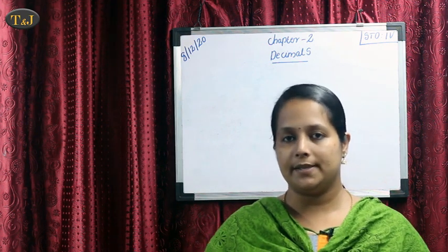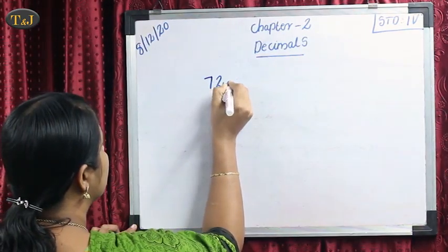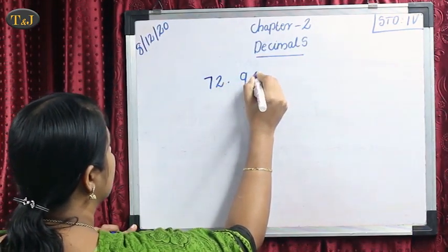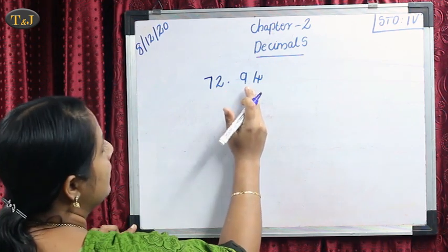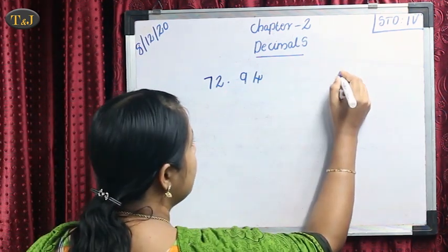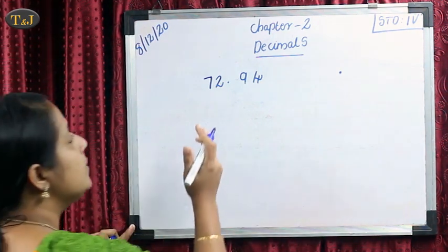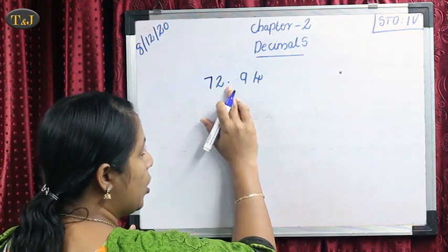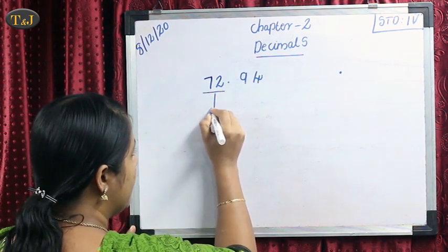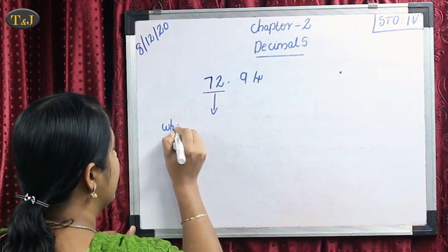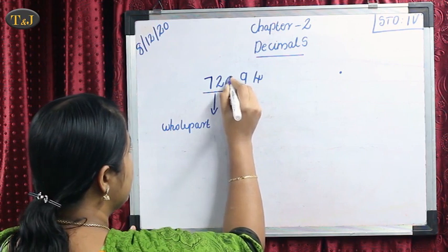I will explain with the help of some examples. Our first example: take the number 72, then put the decimal point and 94. We write the decimal with a dot. So this number is 72 and it is read as point, then the remaining number 94. The part before the point is known as the whole part.